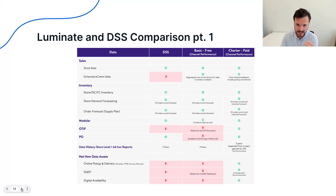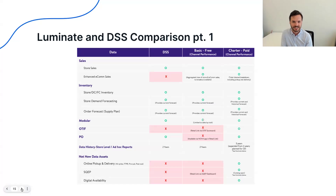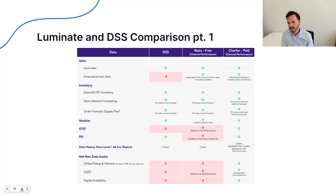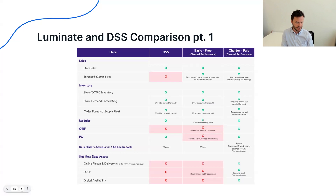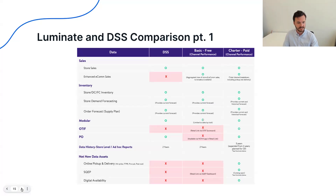This is Walmart supplier-facing documentation, and there's a lot of interesting language being used here to describe what DSS didn't have. The enhanced e-com sales reporting is basically Walmart's way of saying the .com sales reporting in DSS wasn't fully accurate — that's what's going on there. This is something we've seen in a lot of Walmart training videos about how to use Luminate: DSS's .com reporting is not the full picture.